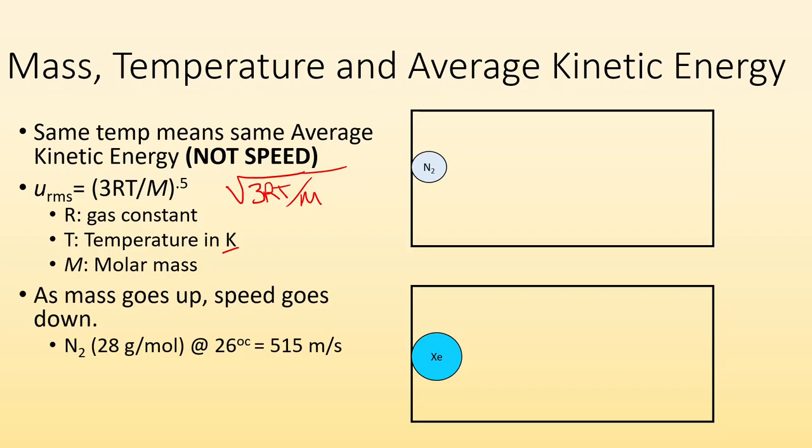So if we're talking about like N2 versus Xe, as the mass goes up we know speed goes down. So at 26 Celsius the root mean square speed of N2 is 515 meters per second. So it's moving pretty quick. And if we do the same comparison for xenon which has a mass that's almost four times greater, at the same temperature its speed is only 240 meters per second. It's a lot slower because it's a more massive particle.